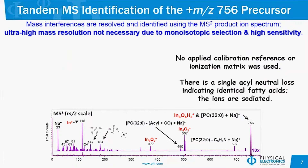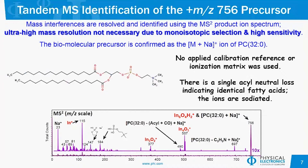Coming back to our biological example: when we do the tandem MS analysis of our precursor at 756.55, what we can see in the product ion spectrum is that there are two unresolved components within that monoisotopic precursor selection window. One component we can readily identify is the sodium adduct of phosphocholine 32-0 — 32 carbons in the acyl chains with zero unsaturations. The other thing we see is an unresolved interference from indium oxide arising from the ITO substrate the tissue section was mounted on. Without any calibration or ionization matrix applied, we identify two components that are unresolved in that selection window.